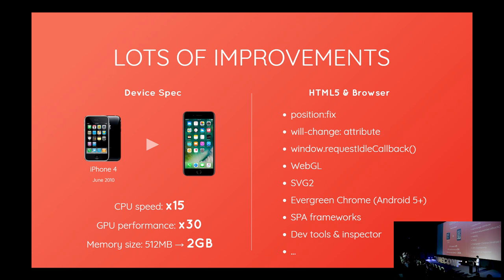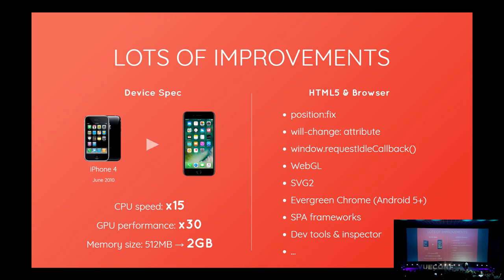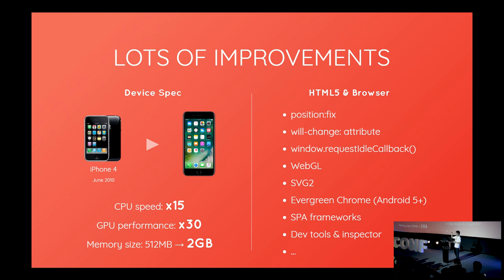But actually, there have been lots of improvements in this area, and mobile web technology can now be very competitive with native experiences. Looking back to around 2010, when iPhone 4 was first distributed — that was our first experience writing mobile HTML5 applications and packaging them as hybrid applications. At that moment the experience was not good. HTML5 capabilities were lacking; even position:fixed was not supported, which is crucial for creating a toolbar mimicking an iOS device.